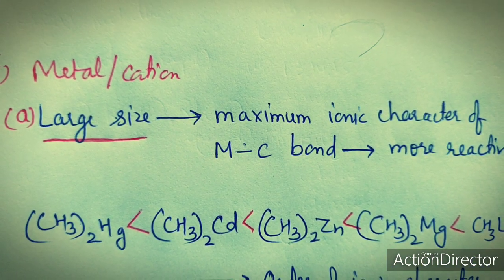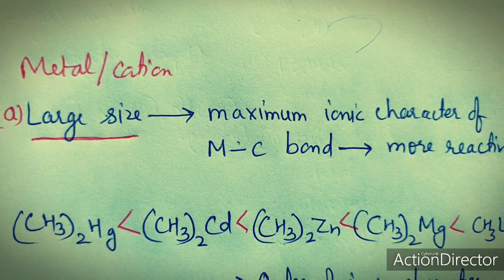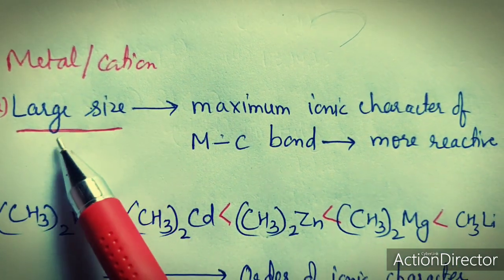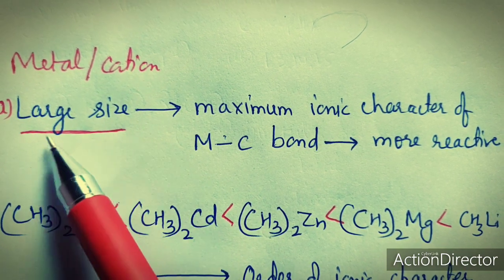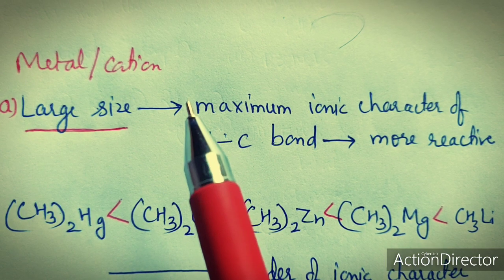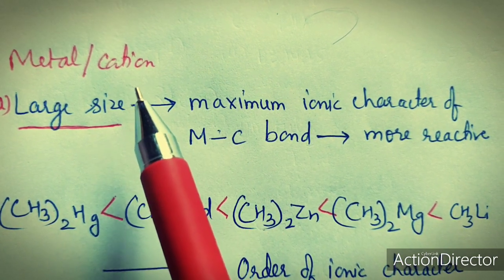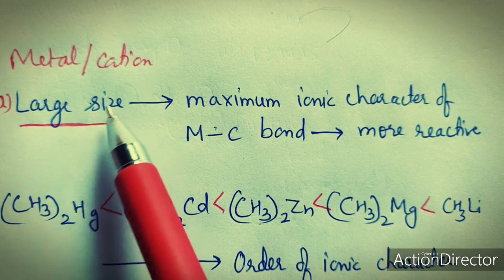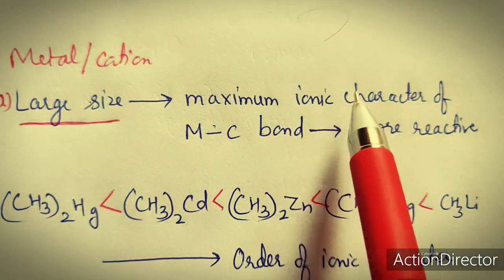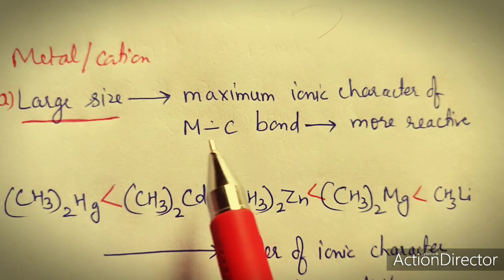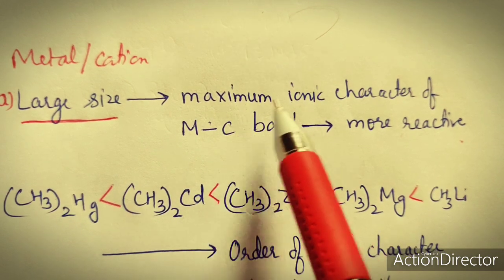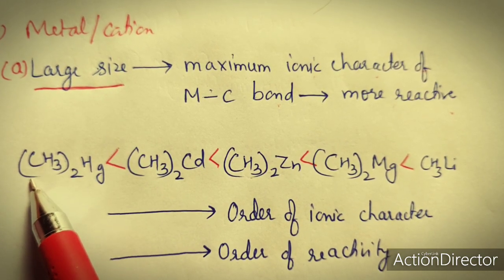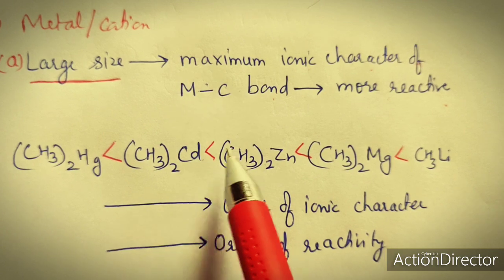The properties of the metal cation that increase the ionic character of the MC bond further increase the reactivity of the organometallic compound. The first factor is size. If the size of the cation is very large — as we have studied in Fajan's rule — the smaller the cation, the more covalent the character. So if the size of the cation is large, ionic character increases because covalent character decreases, and the MC bond becomes more reactive.